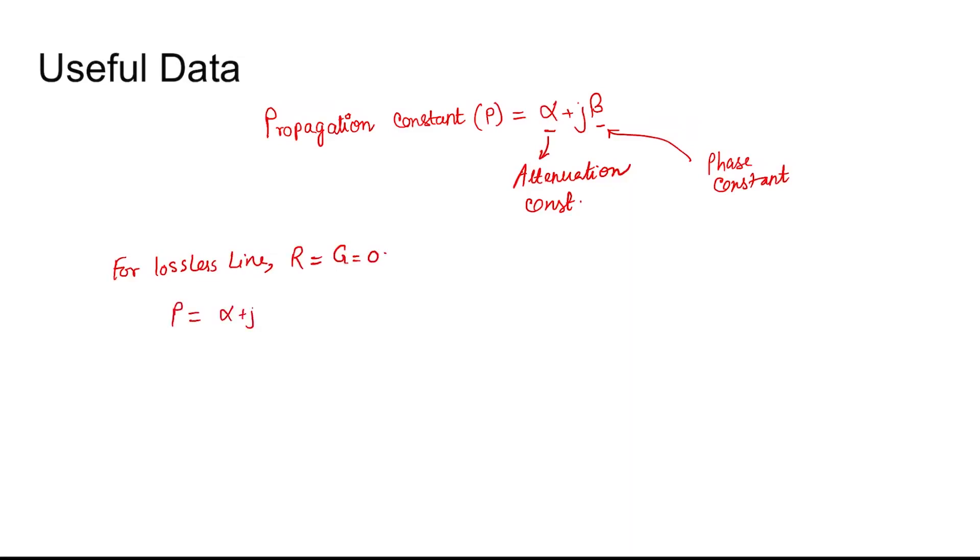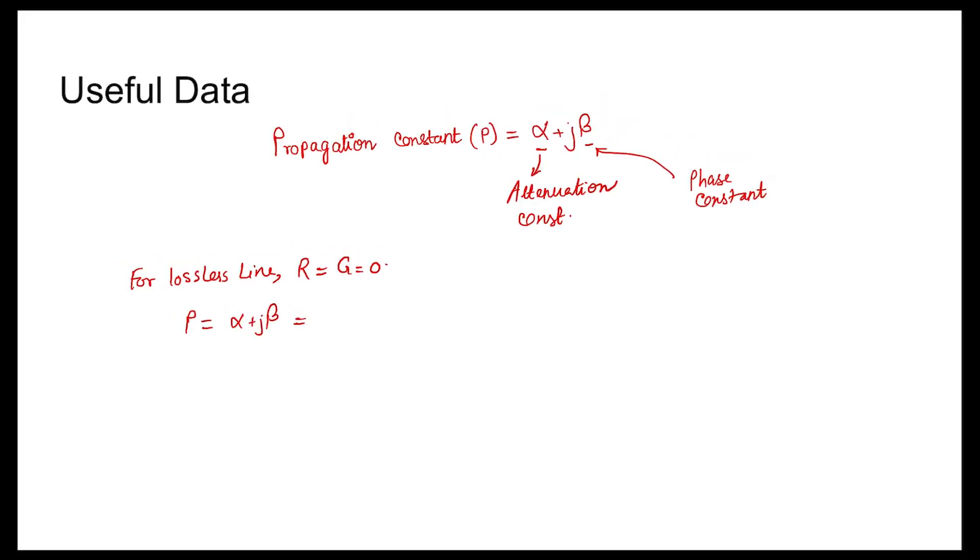The propagation constant P = α + jβ = √((R + jωL)(G + jωC)).